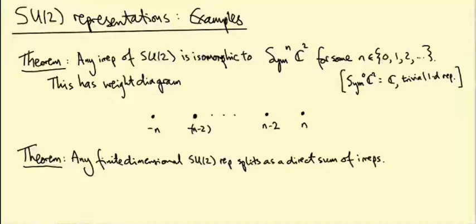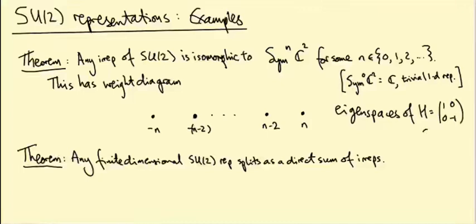We've now proved the classification theorem for the irreducible representations of SU(2): any irreducible representation is isomorphic to Sym_n of the standard representation for some n, where Sym_0 of C² is the trivial one-dimensional representation. Sym_n(C²) has a weight diagram which is a string of blobs, one blob for each weight n, n−2, n−4, down to −n. This is the decomposition into eigenspaces for the action of H, the matrix [[1,0],[0,−1]] in sl(2,C), where each blob represents a one-dimensional eigenspace.